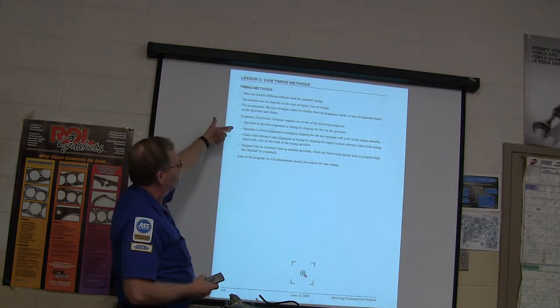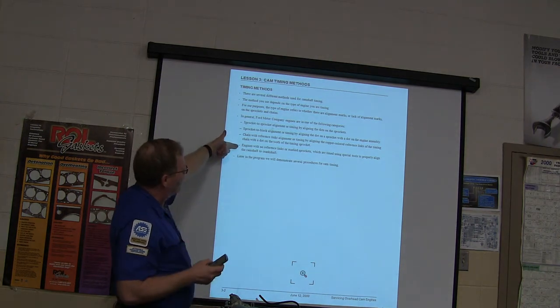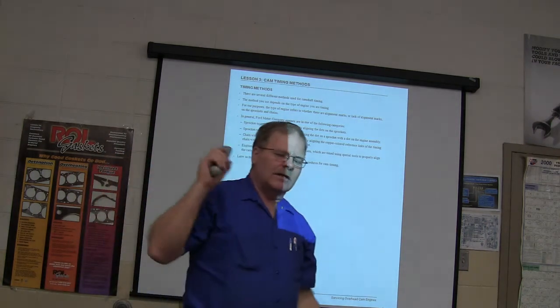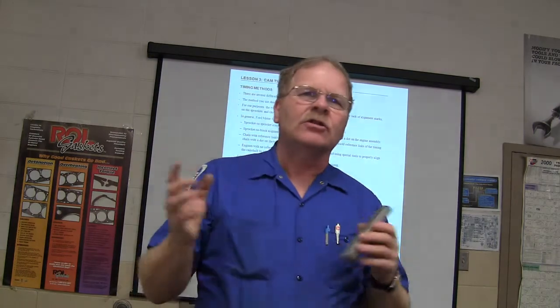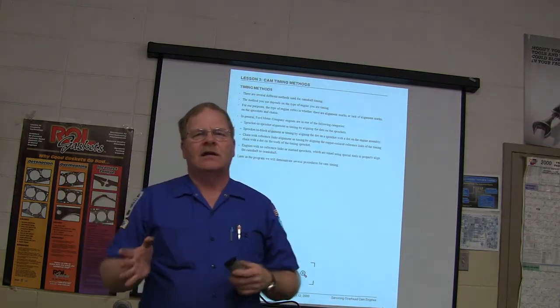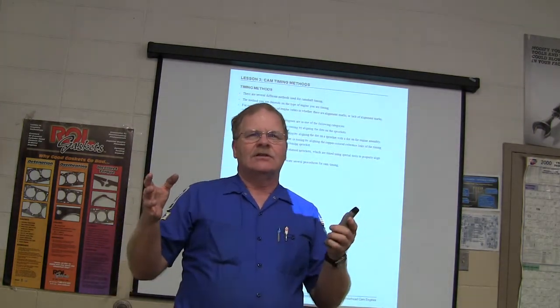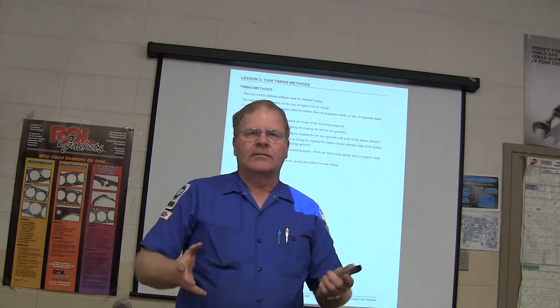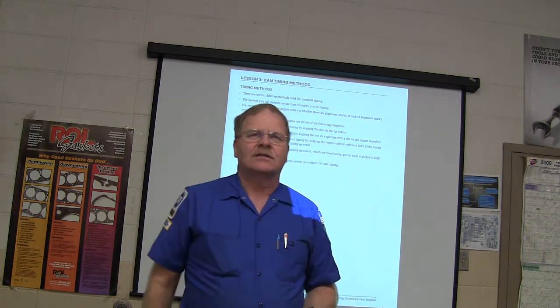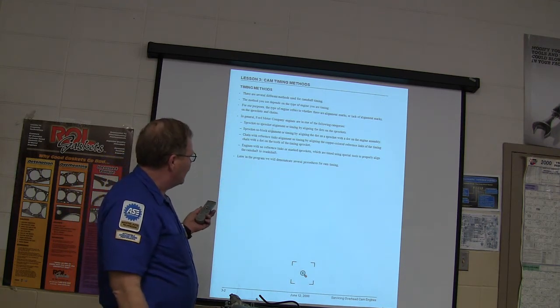So you've got sprockets to block alignment, chain with reference links, which, like you saw on what Adam was doing on that one. No reference links or marks, sprockets tied with special tools. That's like the 4-liter single overhead cam Explorer engine I've got over there. There are special tools that you've got to use. And I'm going to drag that thing over here and throw you guys a worksheet on it so you can do that in addition to all the other worksheets that are piling around over there. And this thing, you've got this engine and you've got to have a tool here and a tool here and a tool here to locate everything. And he actually had a tool he had to use to locate the crankshaft and the sprockets and all that thing.